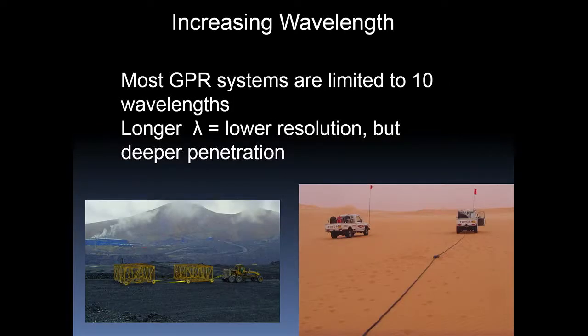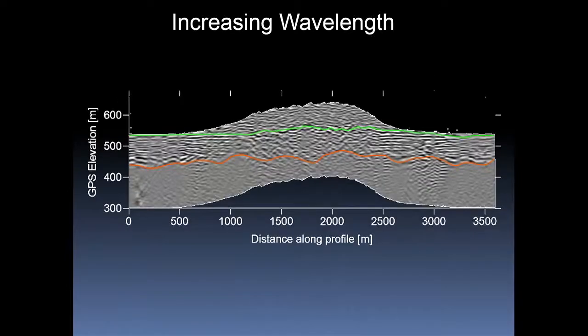But the biggest way to do it and the easiest way would just be to increase our wavelength. A radar system will give you about 10 to 15 wavelengths in penetration in a good environment, so if we have a larger wavelength, we'll get more penetration, and, of course, lower resolution, and that's possible, and these are a couple of the radars that we've built, and they're absolutely massive. I mean, one of them has two boxes the size of this room that you've got to tow around. So it is theoretically possible, and what you end up getting is data that looks like this, which is 200, 250 meters penetration, but with a system the size of this room.